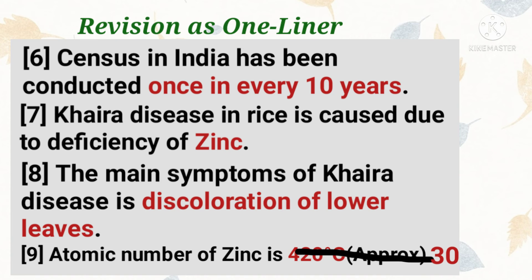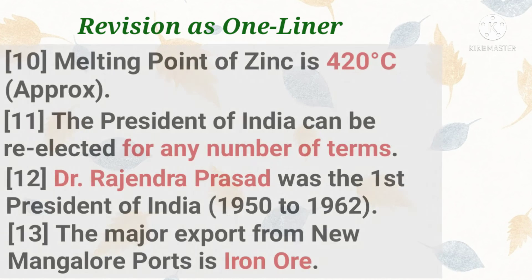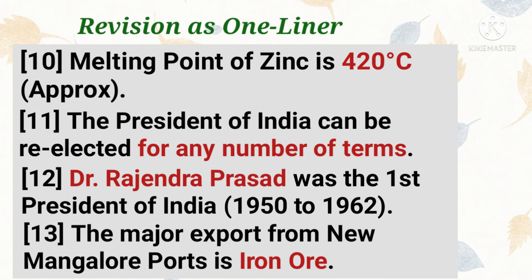Number 8: the main symptom of Khoira disease is discoloration of lower leaves. Number 9: atomic number of zinc is 30. Number 10: melting point of zinc is approximately 420 degrees centigrade. Number 11: the President of India can be re-elected for any number of terms.